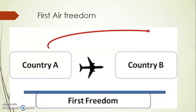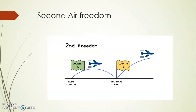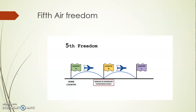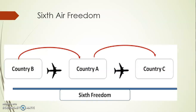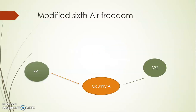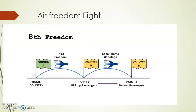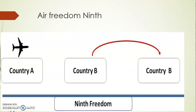Recapping all freedoms: First — fly across any country's airspace; Second — take a technical stopover; Third — take passengers to another country; Fourth — bring passengers back; Fifth — operate between two countries starting from country A; Sixth — connect two countries in between, via the home country; Modified Sixth — connect two places in the same foreign country via home; Seventh — extension of the Fifth, connecting two countries without returning home; Eighth — two places in another country with home connection; Ninth — two places in another country, completely independent of home country. This is the Freedoms of Air topic, very important for aviation and tourism management students.